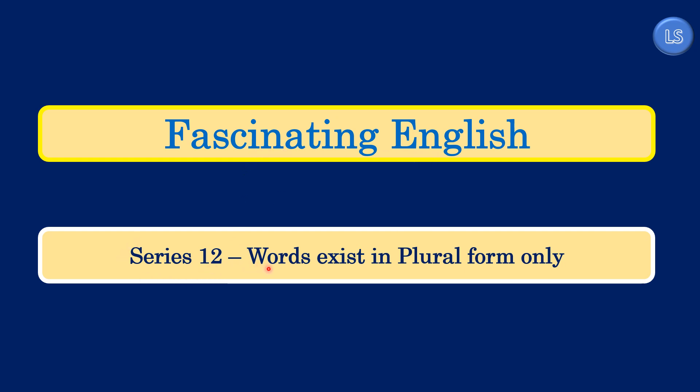In this video, we will be discussing the topic: words that exist in plural form only. In our series 10 video, I told you about words which exist in singular and plural forms in a different way — that means, for a given object, the singular word is different and the plural word is different. But in our series 11 video, we discussed words which are the same in both singular and plural forms. In this current video, we will be discussing words which exist only in plural forms — meaning there are no singular words for some objects or items.